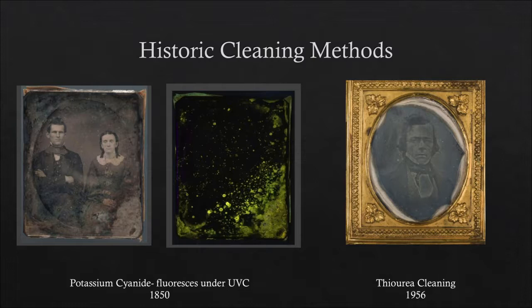In the 1950s, a new compound called thiourea began to be used to clean daguerreotypes. While it probably looked great at the time, 40 to 50 years later we are seeing white residues and hazing on daguerreotypes cleaned with thiourea, likely from over-cleaning or insufficient washing. This cleaning method was widely published in book series and photographic magazines, so many people — not just conservators or scientists — were cleaning their daguerreotypes with it. This will play a big part in what conservators are dealing with today.